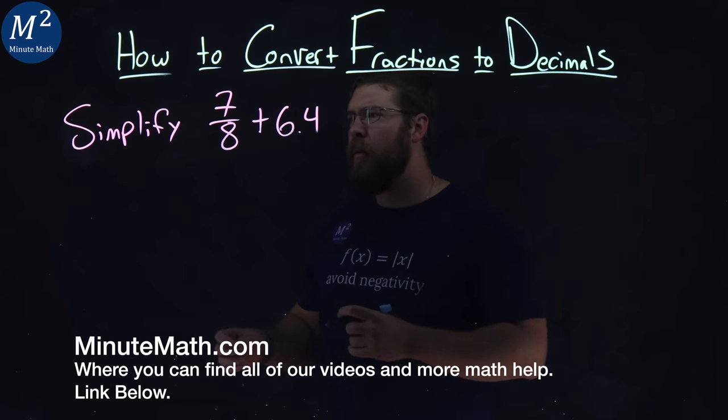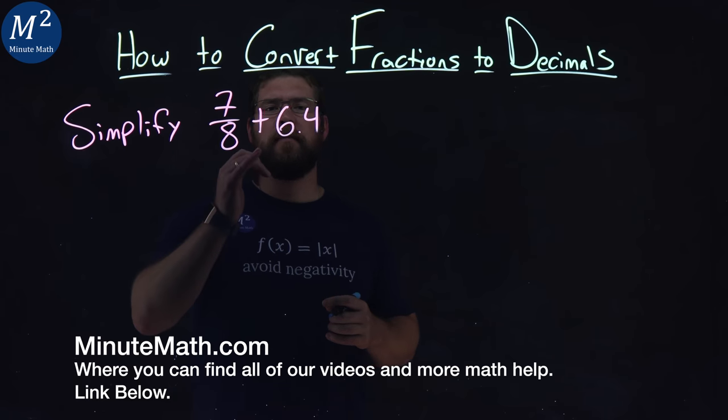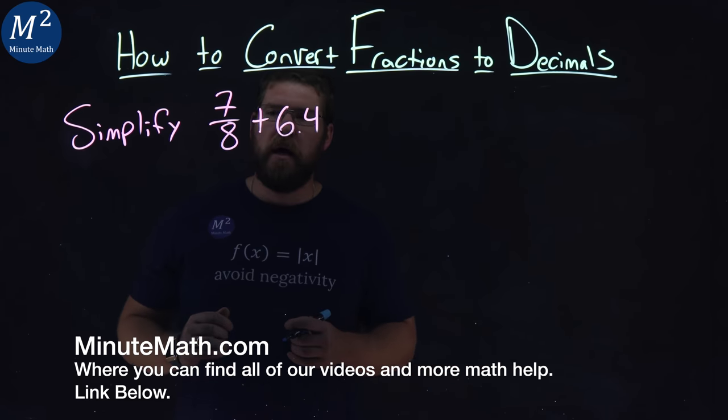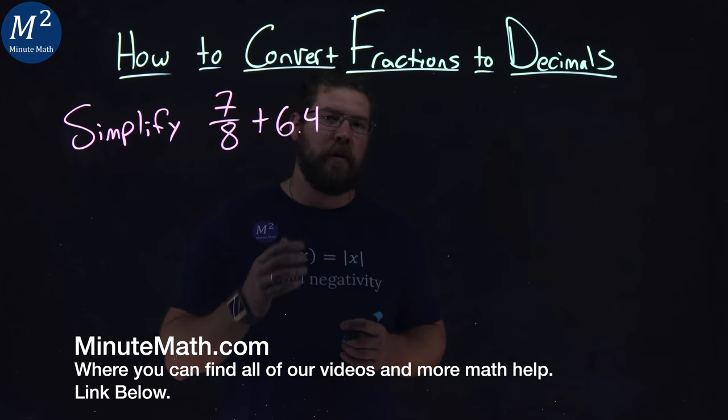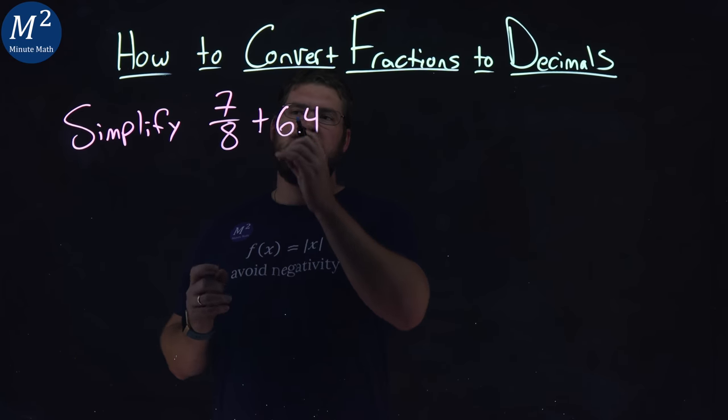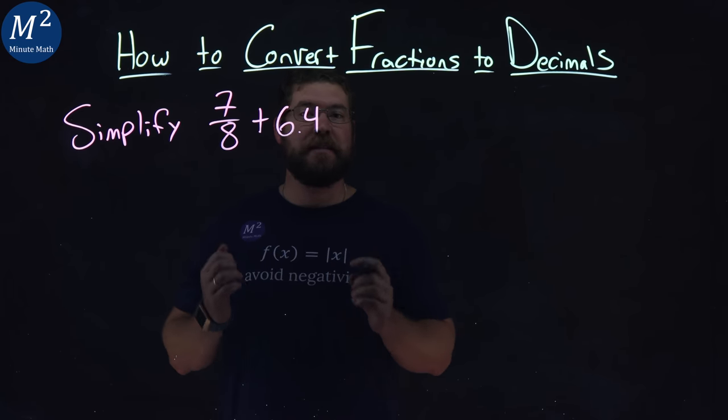We're given this problem right here: simplify 7 eighths plus 6.4. Now, one's a fraction, one's a decimal. Let's convert 7 eighths to a decimal so we can simplify this.